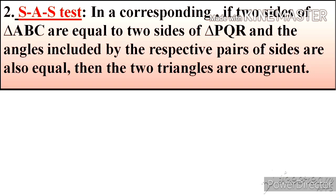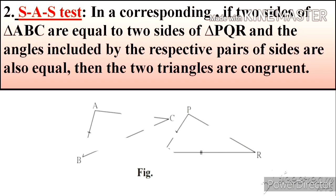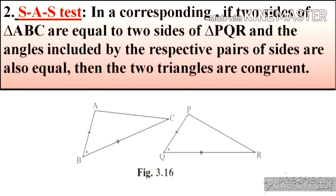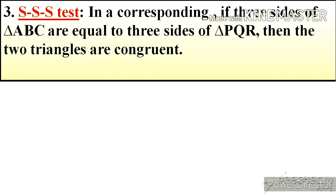Second property is SAS test. If two sides of triangle ABC are equal to sides of triangle PQR and the angles included by the respective pairs of sides are also equal, then the two triangles are congruent. In the figure, side AB is congruent to side PQ, angle B is congruent to angle Q, and side BC is congruent to side QR. This property is called Side Angle Side test, in short SAS test.